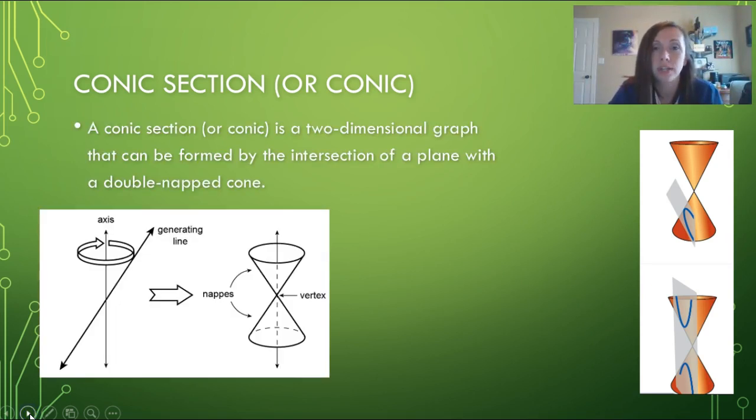A conic section is a two-dimensional graph that can be formed by the intersection of a plane with a double-napped cone.